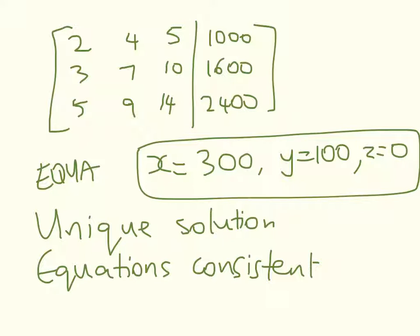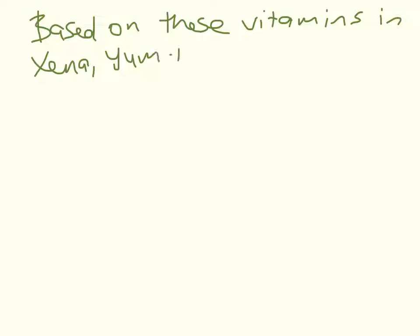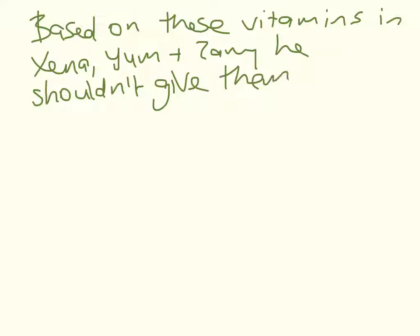So on the next slide we'll look at what we would say because we have to make a recommendation for what Roger should do. So based on these vitamins in Xena, Yum, and Zany, he shouldn't give them any Zany. So what we've got there is we've got Z is equal to 0. So that's the first part of the problem done.